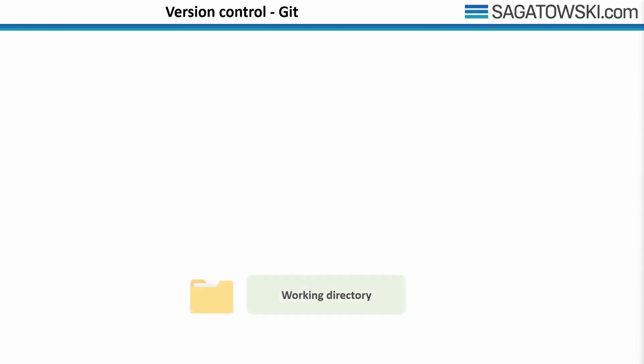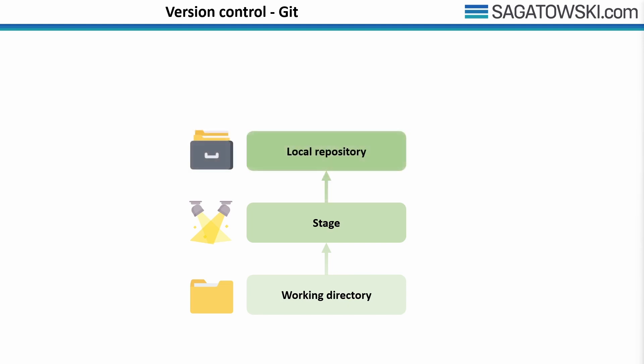Let me give a brief introduction to some concepts in Git before we start using it in practice. First, you have the working directory — essentially your project folder where you store all files and folders. Next you have the stage, sometimes called the index, which contains changes marked to be included in the next commit. The local repository tracks all changes you've made to files in your project, building a history over time.